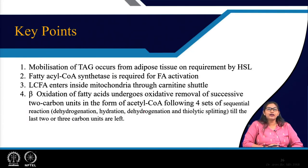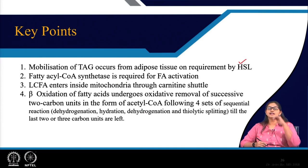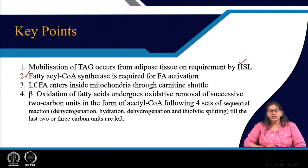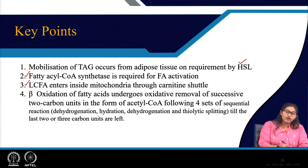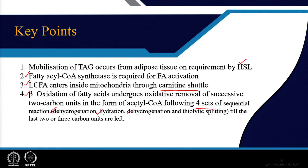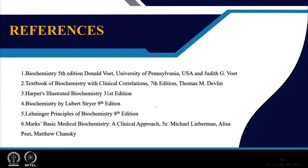Key take-home messages: stored triacylglycerol is mobilized on requirement via hormone-sensitive lipase from adipose tissue. The mobilized free fatty acid is activated by fatty acyl coenzyme A synthetase. Short-chain and medium-chain fatty acids can enter the mitochondrial matrix freely, whereas long-chain fatty acids require the carnitine shuttle transporter. Beta oxidation follows 4 sequential reactions — dehydrogenation, hydration, again dehydrogenation, and thiolytic splitting — giving sequential release of 2-carbon acetyl coenzyme A.